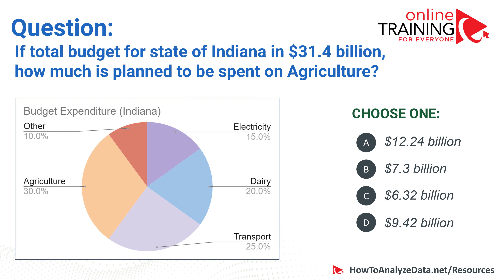Now let's review an assessment test question which tests your knowledge of charts and graphs. Which of the following options represents the largest price increase in a single month? You're presented with a graph containing three different lines: one for tulips, one for orchids, and one for roses. You have four choices: tulips from January to February, tulips from March to April, orchids from April to May, and roses from February to March. Which one do you think is the correct answer?